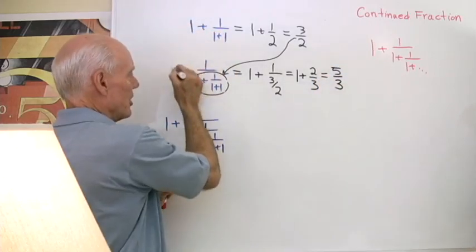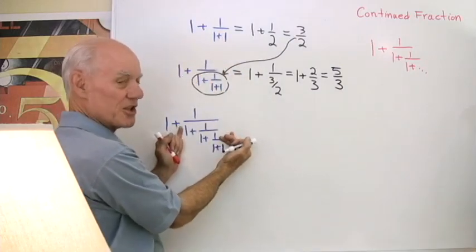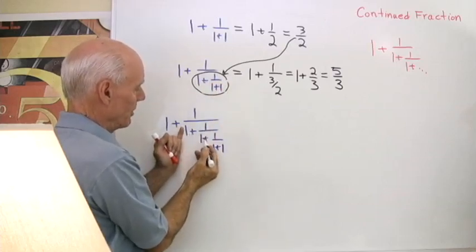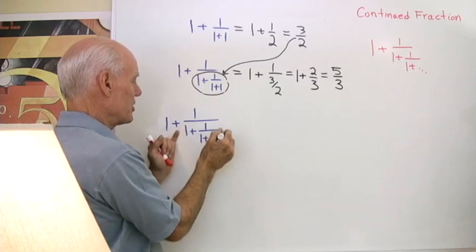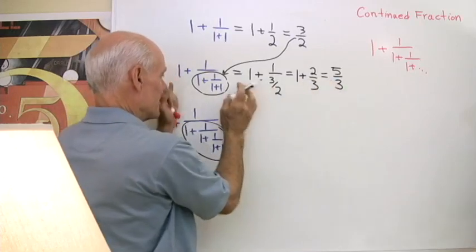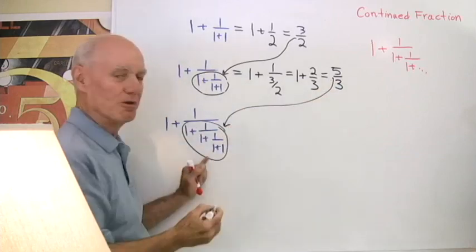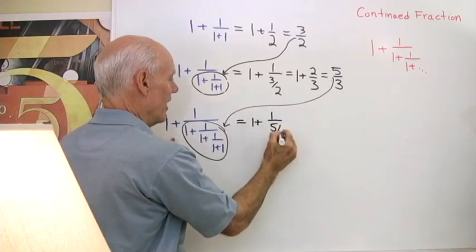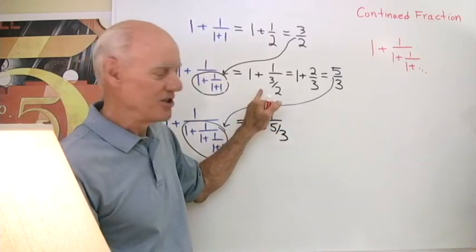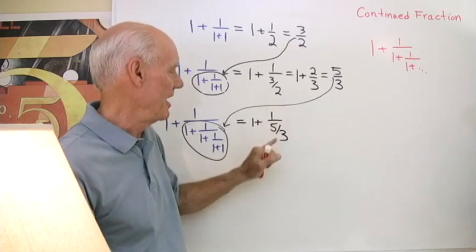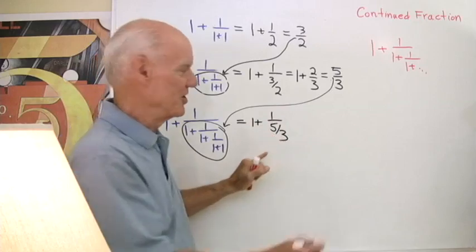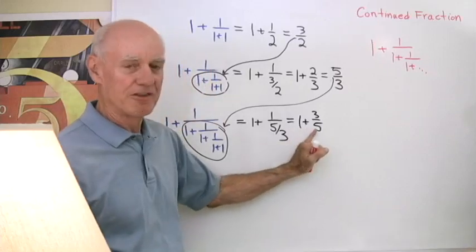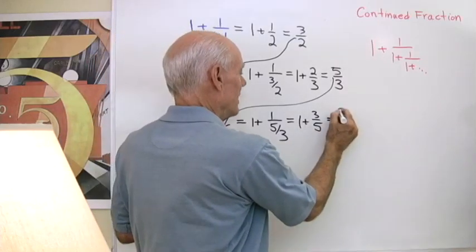Looking at the next expression — 1 plus 1 over 1 plus 1 over 1 plus 1 — I can see that this expression again shows up inside, and it must equal 5 thirds. So I have 1 plus 1 over 5 thirds, same kind of looking expression, but now with 5 thirds instead of 3 halves. The reciprocal of 5 thirds is 3 fifths, so 1 plus 3 fifths gives 5 fifths plus 3 fifths, which is 8 fifths.